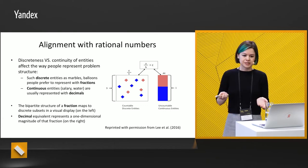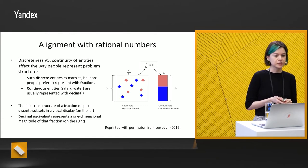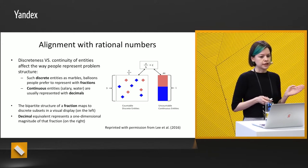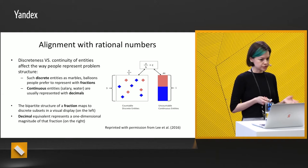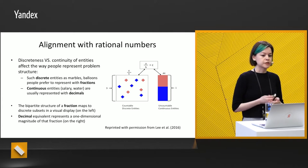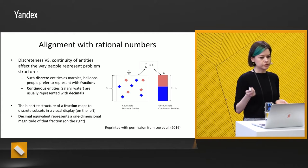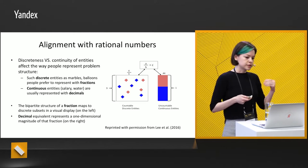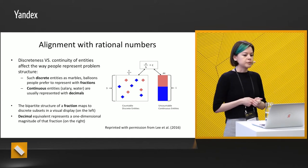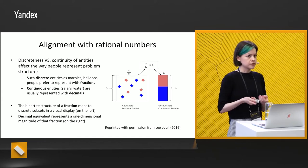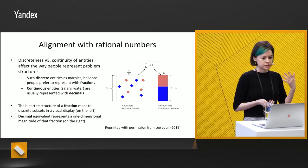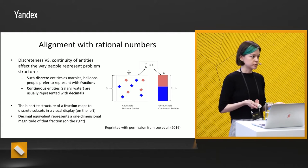We also have another heuristic — semantic alignment with rational numbers. It has been shown that discreteness and continuity of entities in word problems affect the way people represent problem structure. For example, discrete entities such as marbles, balloons, and pens — people prefer to represent with fractions. And continuous entities such as celery or water are usually represented with decimals.